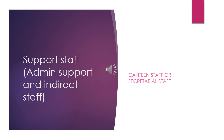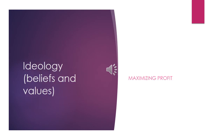In the support staff block we can have canteen staff or secretarial staff, because they provide non-core services and indirect support. Finally, we have ideology, which represents organizational beliefs and values. In Company C, the board of directors' wish to maximize profits by cutting costs is considered the core ideology of Company C.